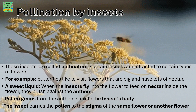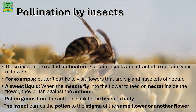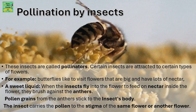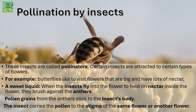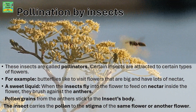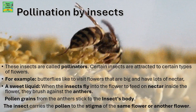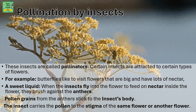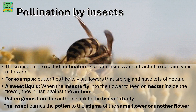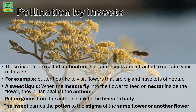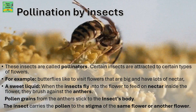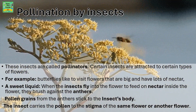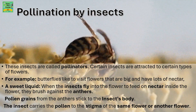Pollination by insects. These insects are called pollinators. Certain insects are attracted to certain types of flowers. Whenever you think of a bee, bees come and suck the nectar out of the flower — that is because they are attracted to certain kinds of flowers.